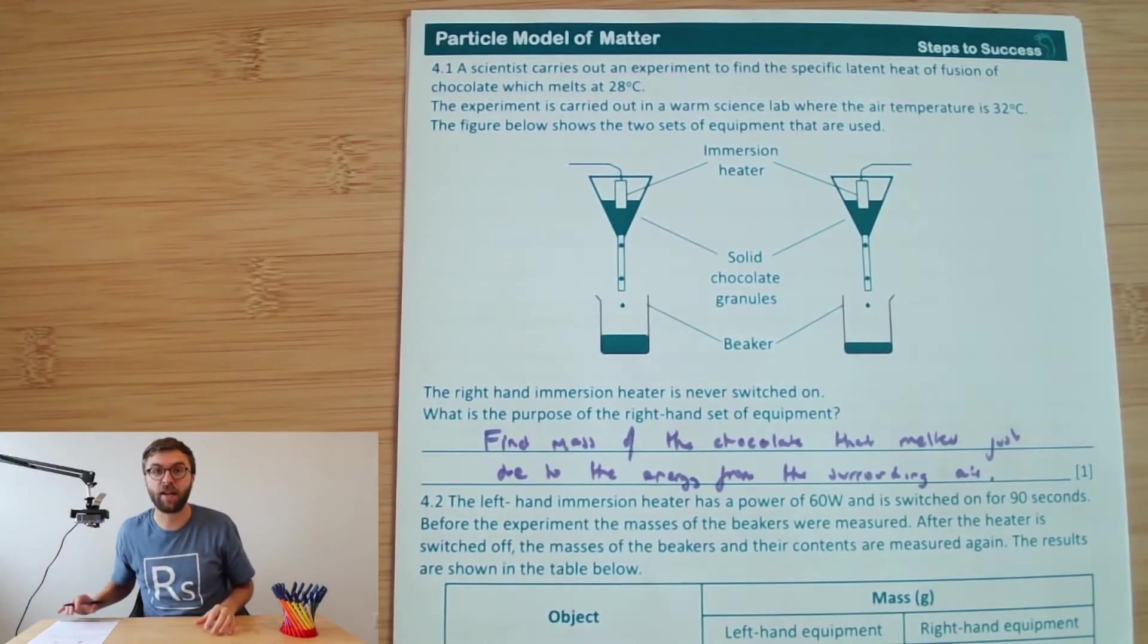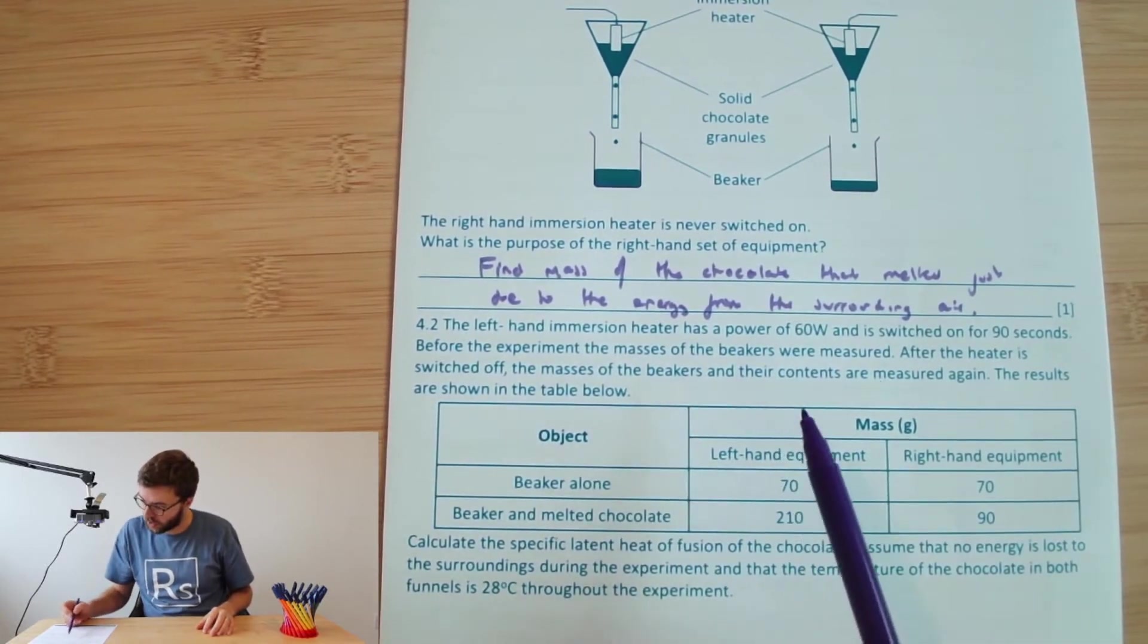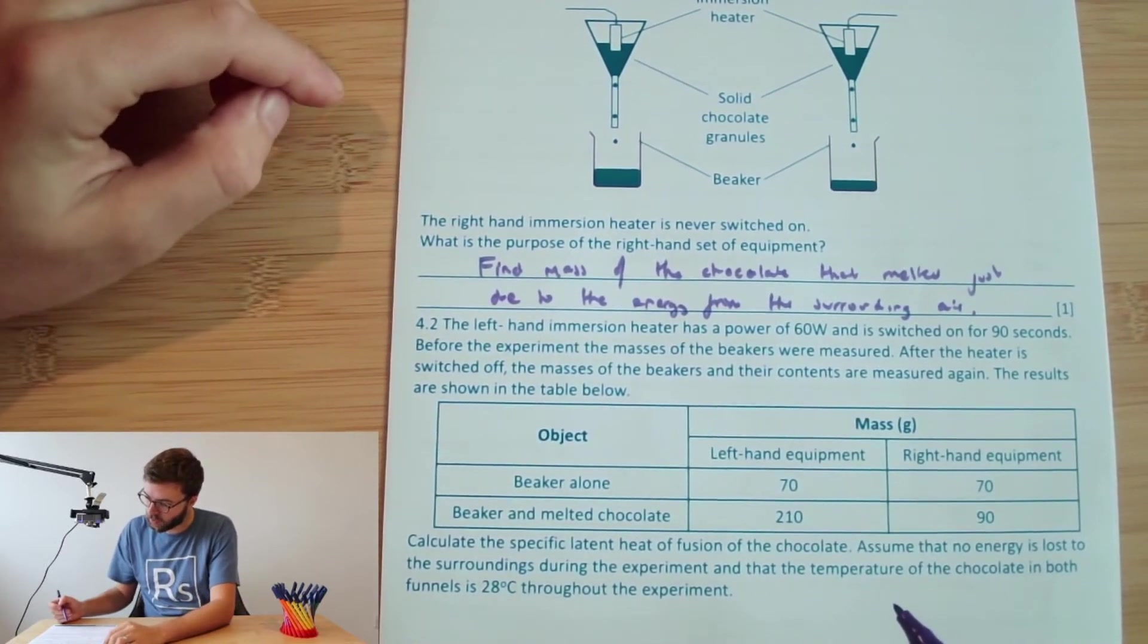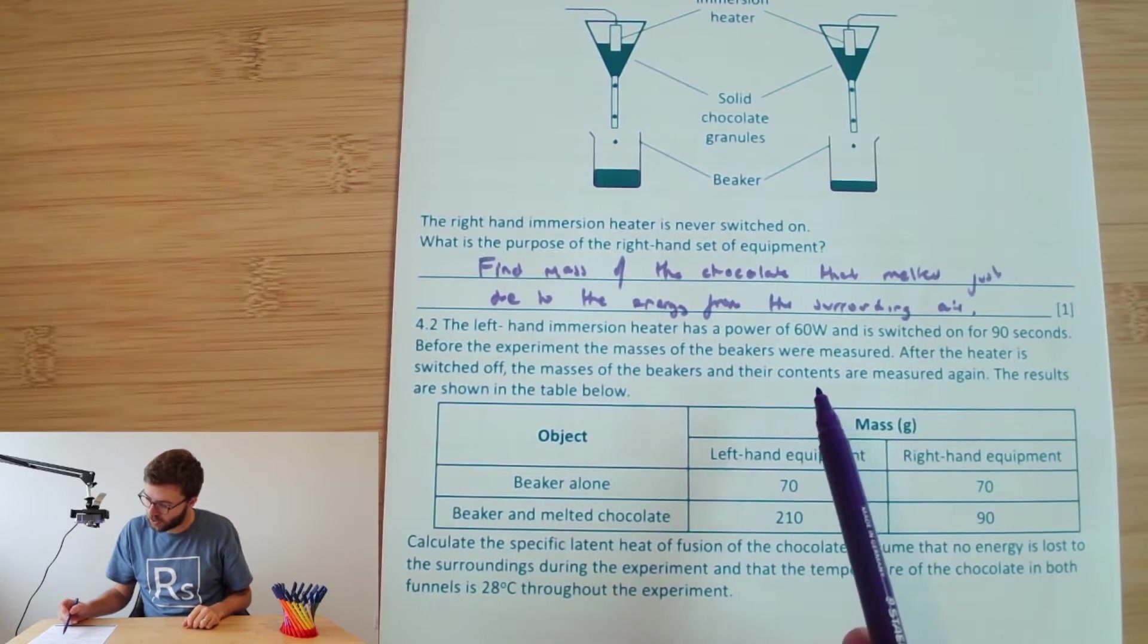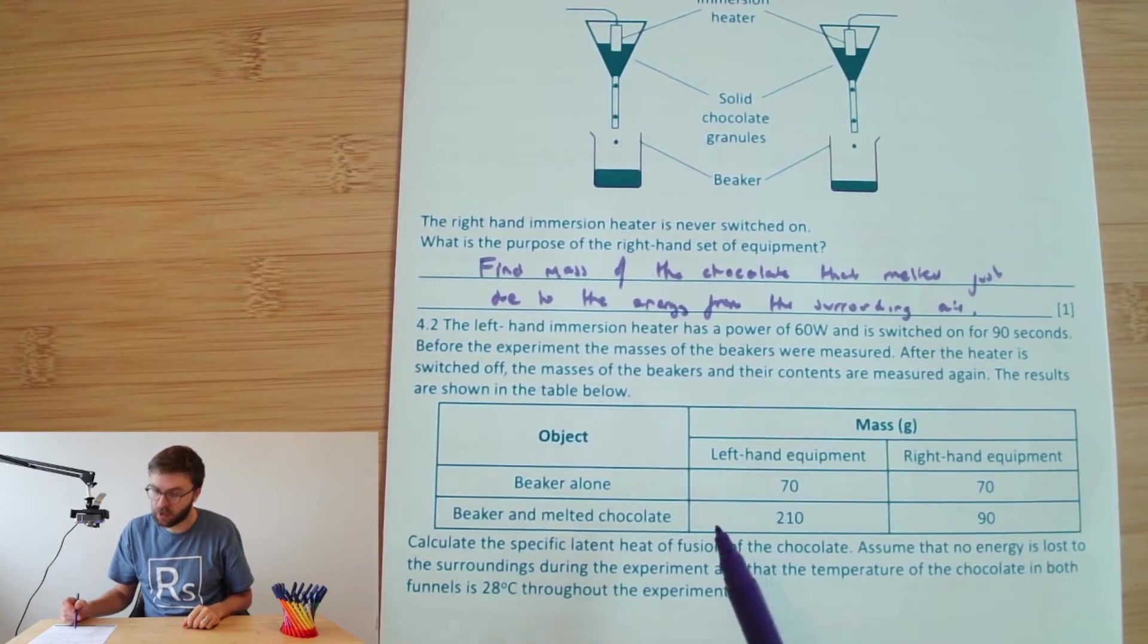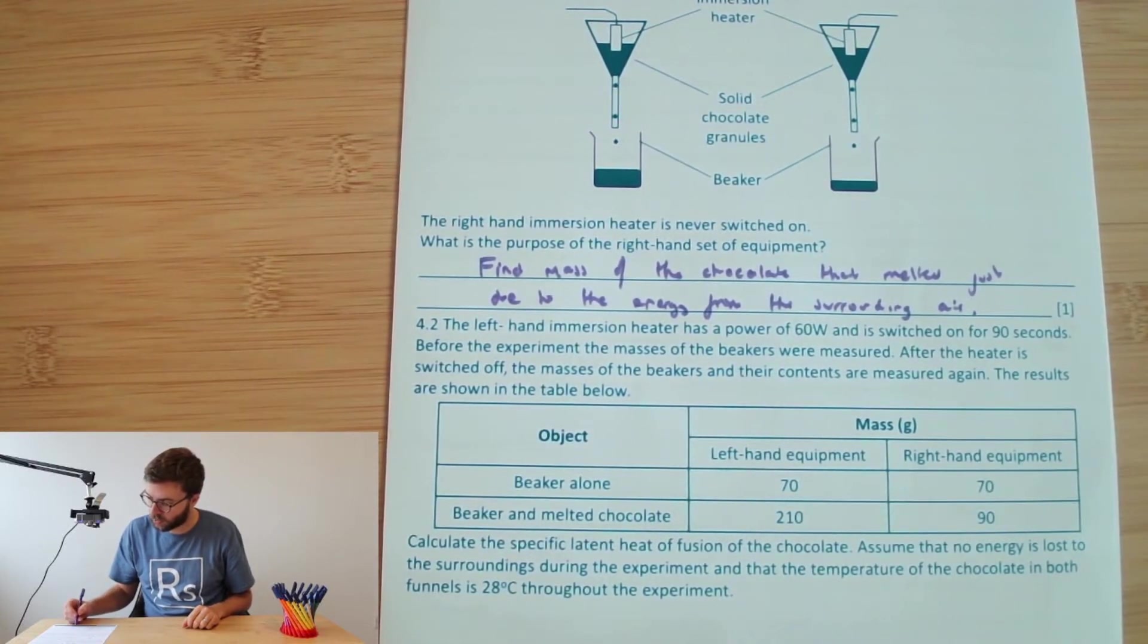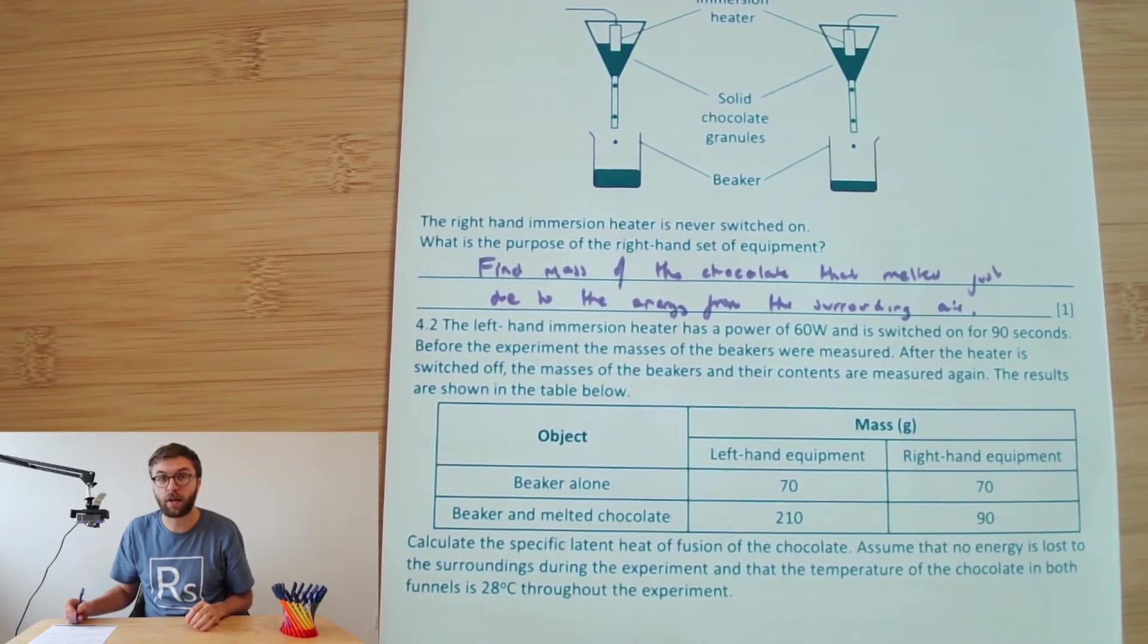Okay, so let's move on to question two. So in 4.2, we've got the left hand immersion heater at the power of 60 watts, so that's this one here, and is switched on for 90 seconds. Before the experiment, the mass of the beakers were measured, and after the heater is switched off, the mass of the beakers and their contents are measured again. The results are shown in the table below. Calculate the specific latent heat of fusion of the chocolate, assume that no energy is lost to the surroundings during the experiment, and that the temperature of the chocolate in both funnels is 28 degrees Celsius throughout the experiment.